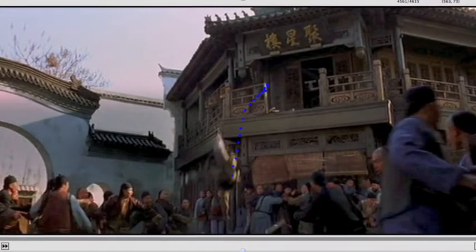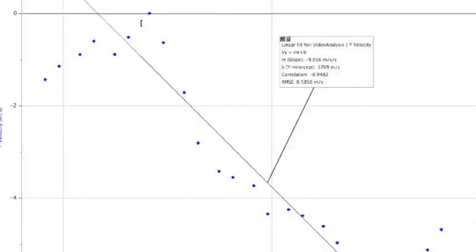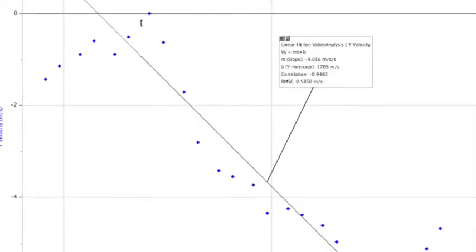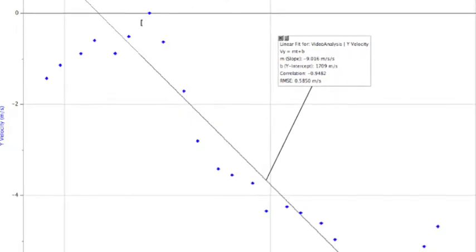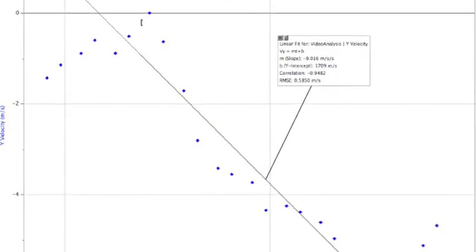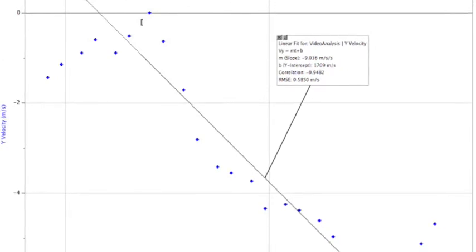We imported that clip into Logger Pro and did a frame-by-frame analysis so that we could see what the vertical motion of that guy looked like as he fell to the ground. If you look closely at the graph, you can see that the zero velocity line is at the top of the graph. So the velocity of the guy is becoming increasingly negative. That's just what we'd expect for an object that's falling.